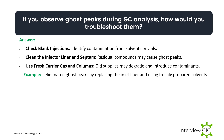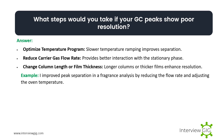If you observe ghost peaks during GC analysis, how would you troubleshoot them? Check blank injections to identify contamination from solvents or vials. Clean the injector liner and septum, as residual compounds may cause ghost peaks. Use fresh carrier gas and columns, as old supplies may degrade and introduce contaminants. Example: I eliminated ghost peaks by replacing the inlet liner and using freshly prepared solvents.